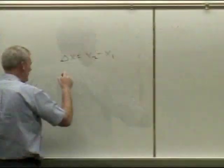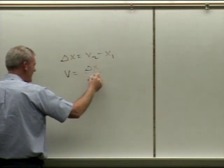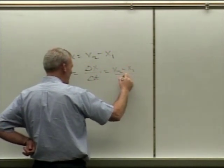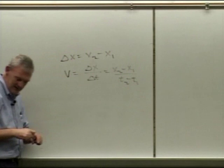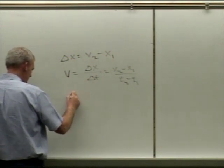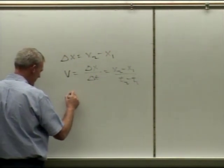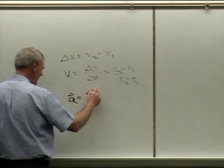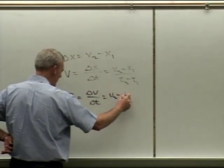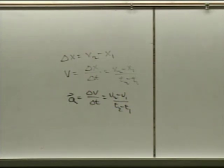We knew that displacement delta-x is x₂ minus x₁, and velocity equals displacement divided by change in time, written as (x₂ - x₁)/(t₂ - t₁). Got to get used to the subscripts. We also found that acceleration equals the change in velocity over change in time, which is (v₂ - v₁)/(t₂ - t₁). You've known since probably fifth or sixth grade that speed equals distance divided by time.